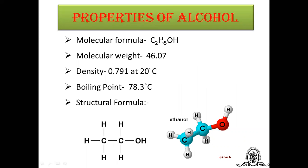Properties of alcohol are: Molecular formula of ethanol is C2H5OH. Its molecular weight is 46.07. Density of the ethanol is 0.791 at 20 degrees Celsius. Boiling point of ethanol is 78.3 degrees Celsius. The structural formula of ethanol is CH3CH2OH. And this is nothing but the structural formula of the ethanol. Here you can also see CH3CH2OH.